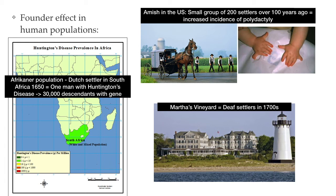For example, the prevalence of Huntington's disease among the Afrikaner population in South Africa is much higher than in the general population, due to the fact that when the Dutch settlers landed in South Africa in the 1650s, one of them had Huntington's disease and was able to pass that on to his descendants. Another example is the much higher incidence of polydactyly in the Amish population than in the general population. And as a final example, there is the disproportionate percentage of the population living on Martha's Vineyard — an island off the southeastern coast of Massachusetts — that is affected by a hereditary form of deafness. The overall rate of vineyard deafness peaked in the 19th century at an estimated 1 in every 155 islanders, which far exceeded the rate of deafness in the American population in general.